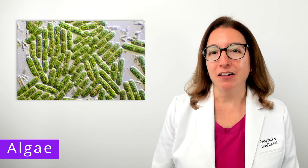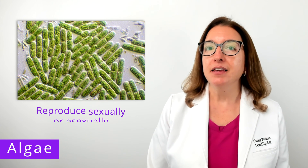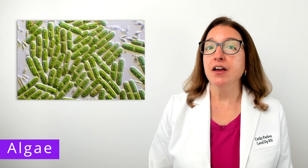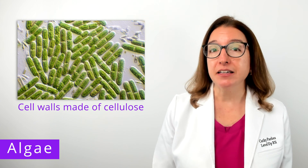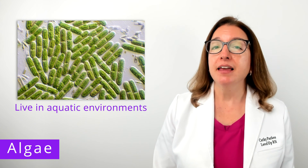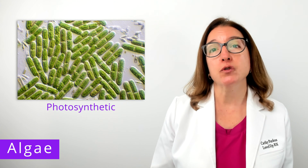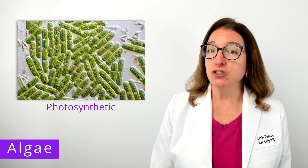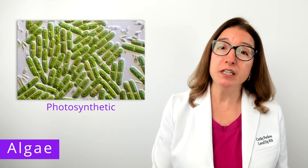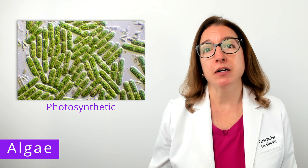Next, let's talk about algae, which are unicellular or multicellular eukaryotes. They can reproduce sexually as well as asexually. Their cell walls are composed of cellulose, which is a polysaccharide made up of sugar molecules. They live in aquatic environments, and most algae is photosynthetic. Most algae is not harmful to humans, but some, such as blue-green algae, can produce a toxin under certain environmental conditions.